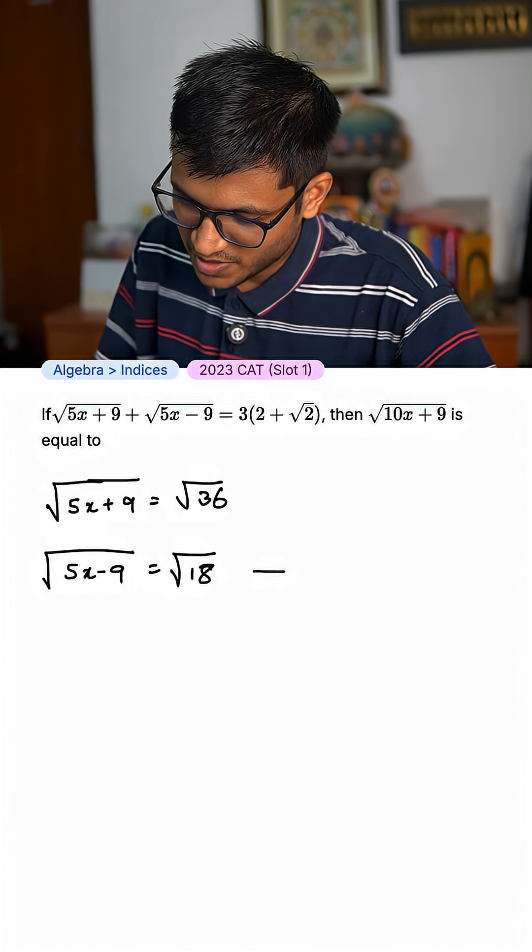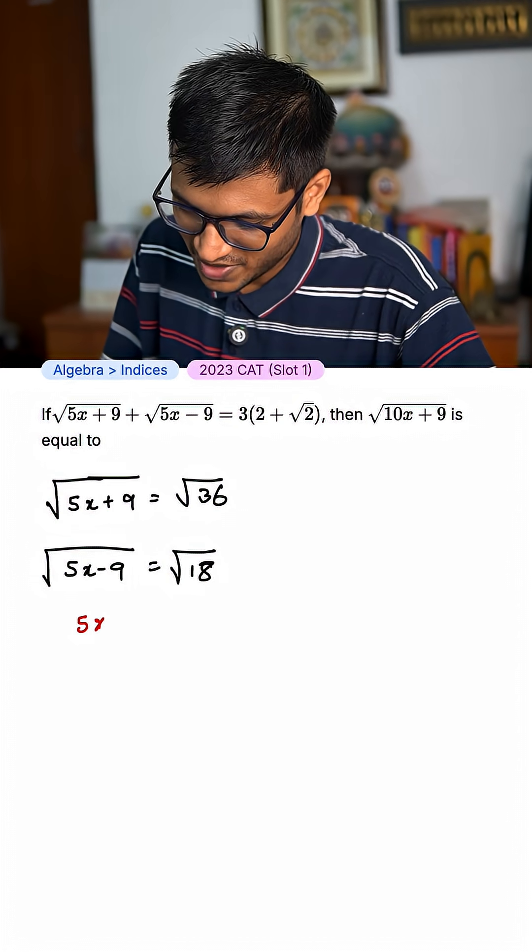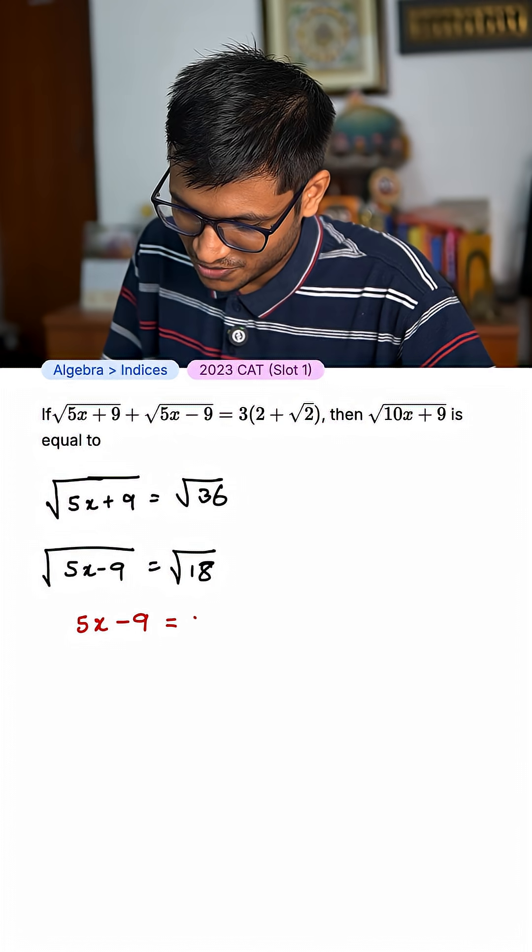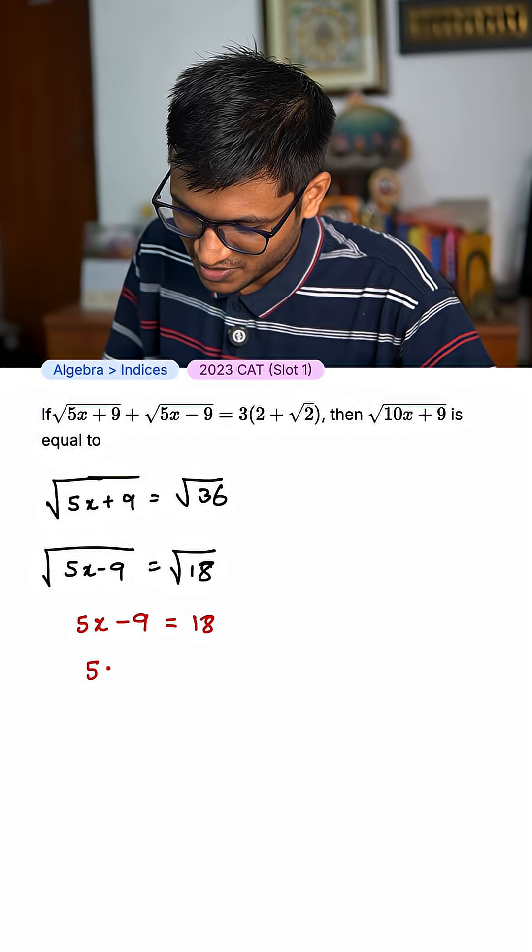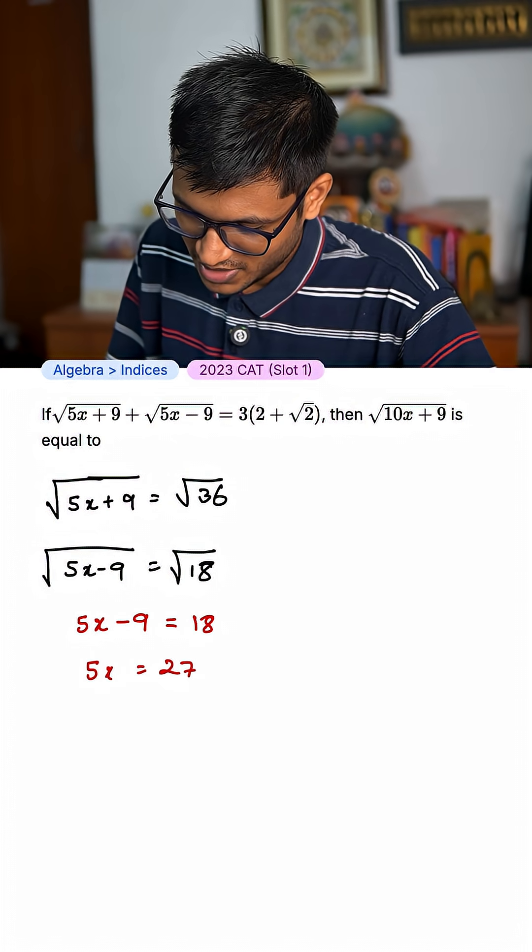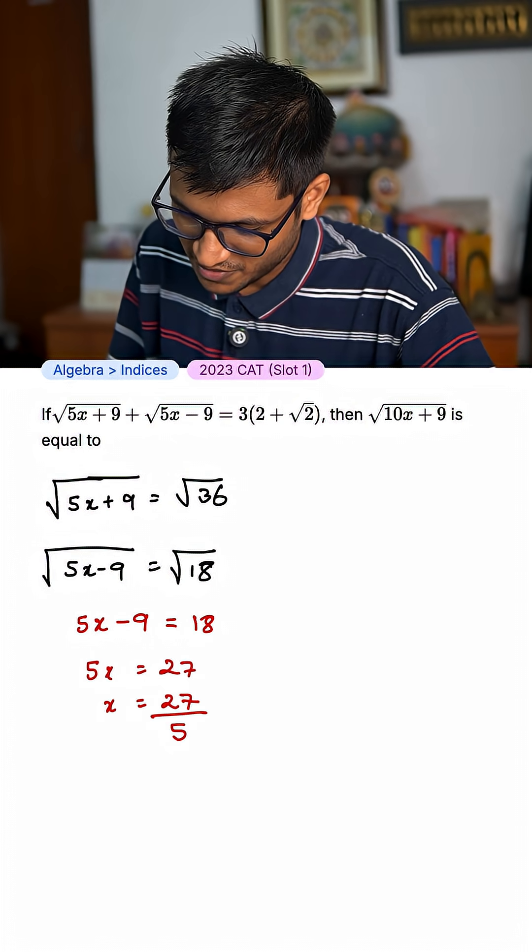If yes, let me try to derive the value of x. So 5x - 9 = 18. 5x = 27. And x = 27/5.